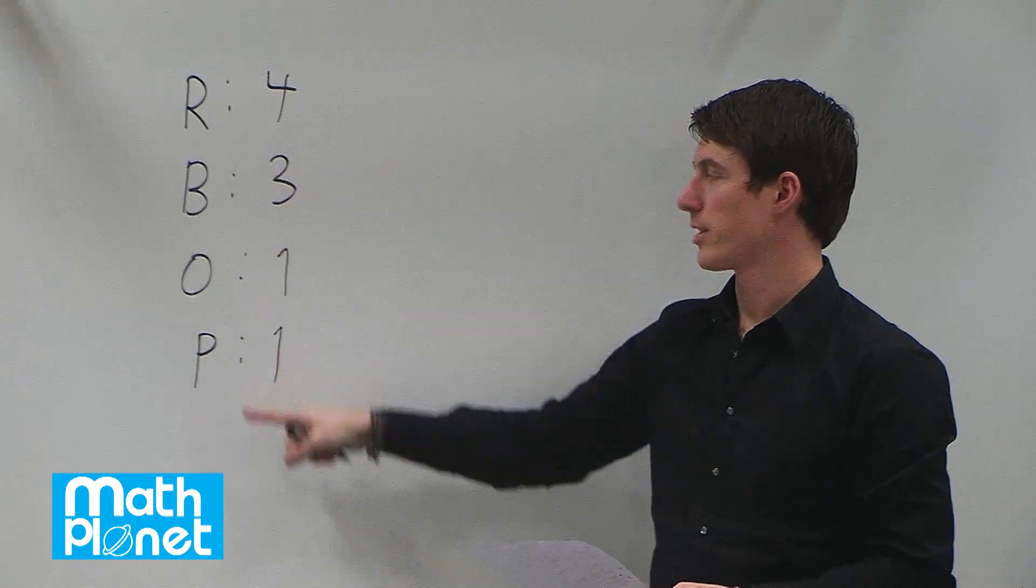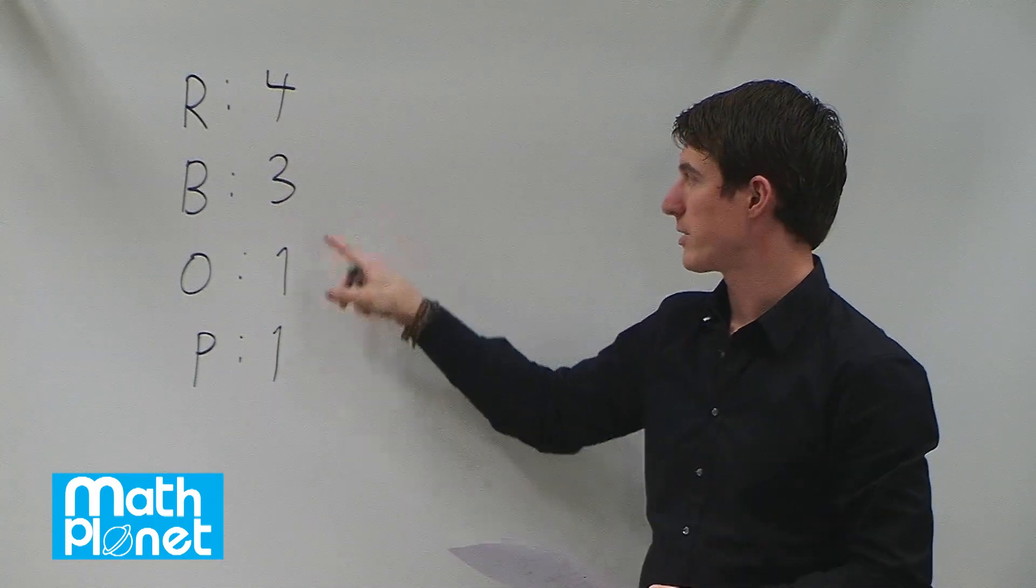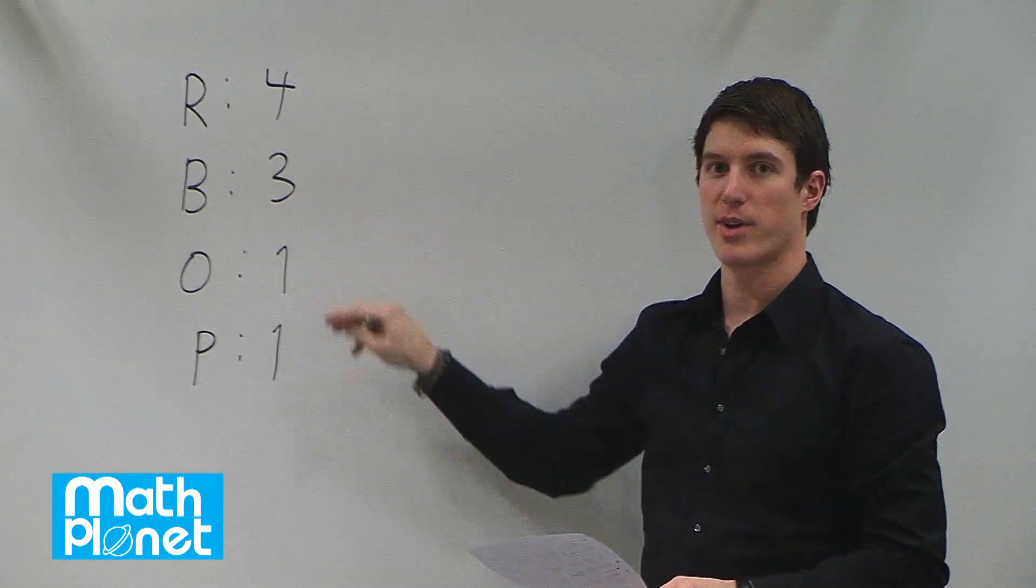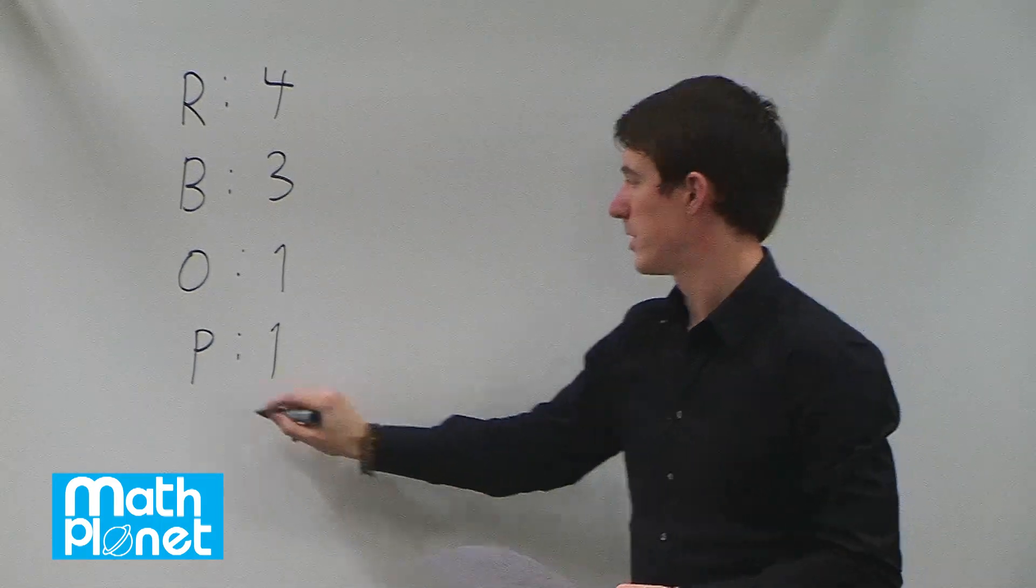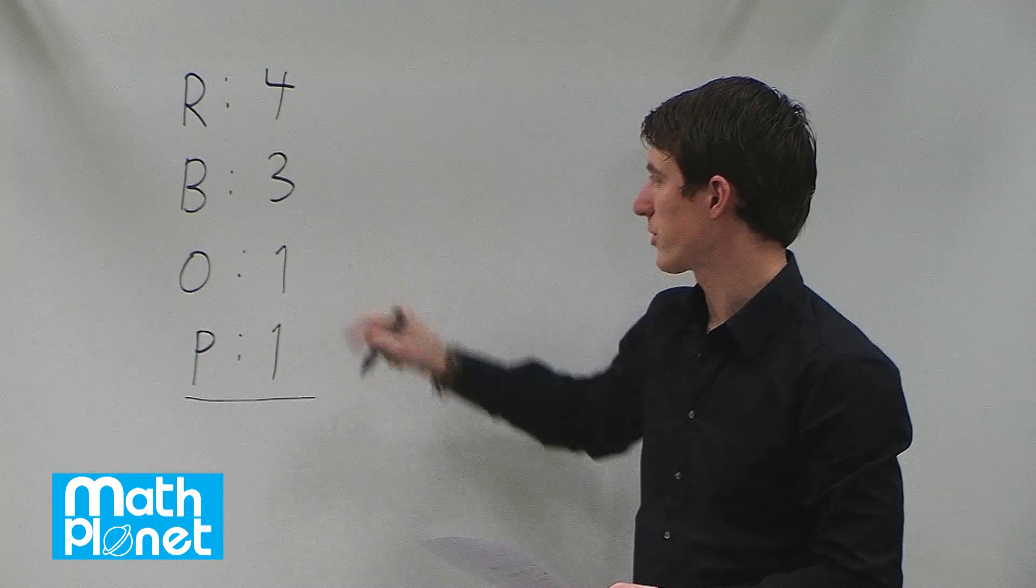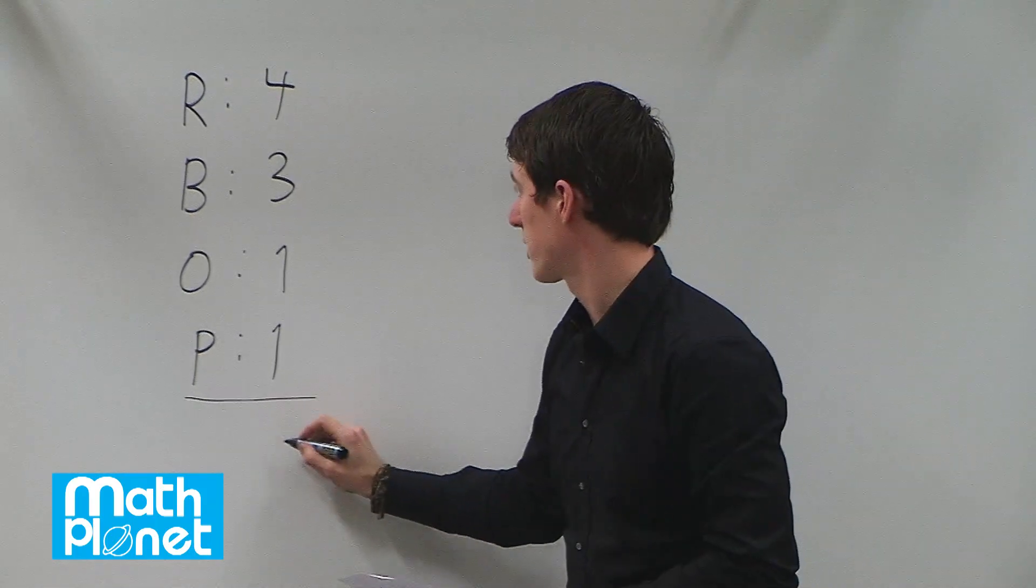So to do that, I need to see what the total number of pens are, and then we can divide the number of blue pens divided by the total number of pens. So the total is just this sum, so that comes out to be four plus three plus one plus one, which is nine.